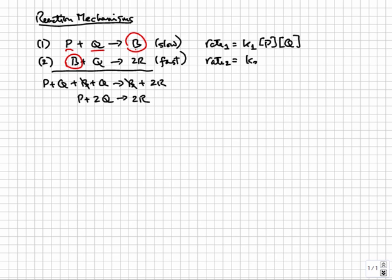Similarly, the rate of the second reaction is K2 times the concentration of B and Q. Because the first reaction is slow, it becomes a bottleneck for the entire mechanism. The rate of the overall reaction is therefore controlled by this step. This is called the rate determining step.